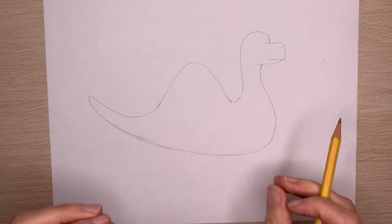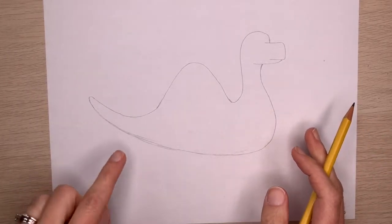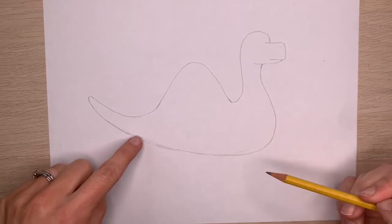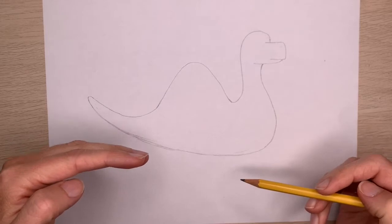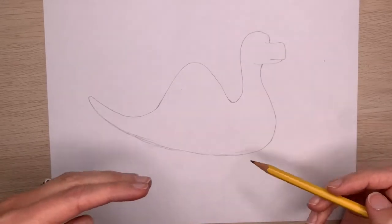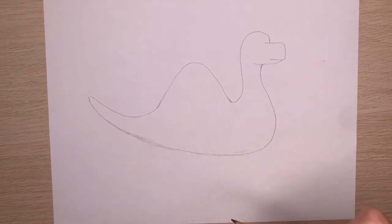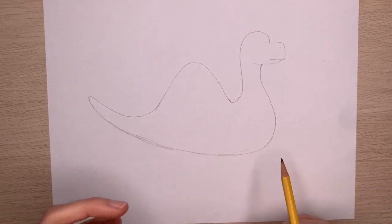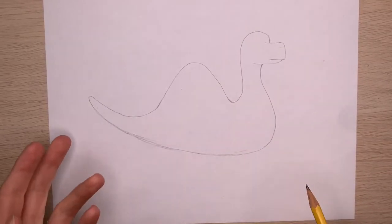Now the legs can be tricky only because if you notice how the bottom of this dinosaur comes down further than back here on the tail, it can be really hard to draw legs where they look like they'd actually be walking on the grass or the ground. So let's give our brain and our eyes a little bit of a break and draw that ground first.